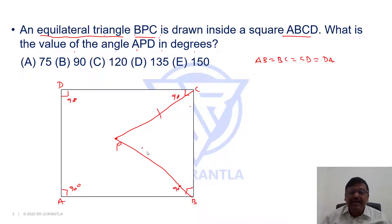Equilateral triangle means all sides are equal. So BP equals BC equals CP. All three sides are equal. Now all angles are also equal, each angle is 60 degrees. But we know this entire angle is 90 degrees. If this is 60, what is this portion, 30 degrees. Similarly, what is this portion, this is 30 degrees.